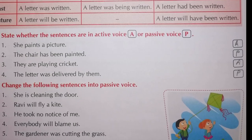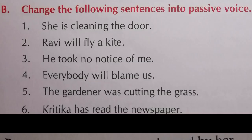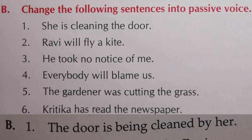Now change the following sentences into passive voice. First: 'She is cleaning the door.' Here 'she' is the subject and 'door' is the object. As I told you in the rules — the subject comes to the object's place and the object comes to the subject's place. So 'the door' comes first. Since 'cleaning' uses '-ing,' it means it is continuous — so 'is being' is applied. Answer: 'The door is being cleaned by her.'